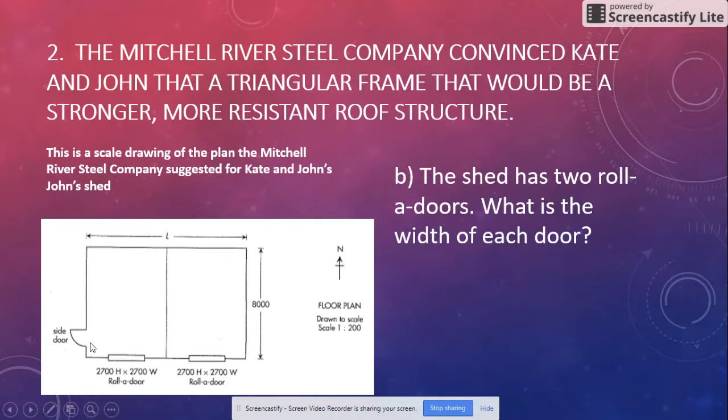The shed has two roller doors. What is the width of each one? This is the length here. What is the width of each roller door? It tells you it's 2700 centimeters, or it'd be 2.7 meters. You can put that.